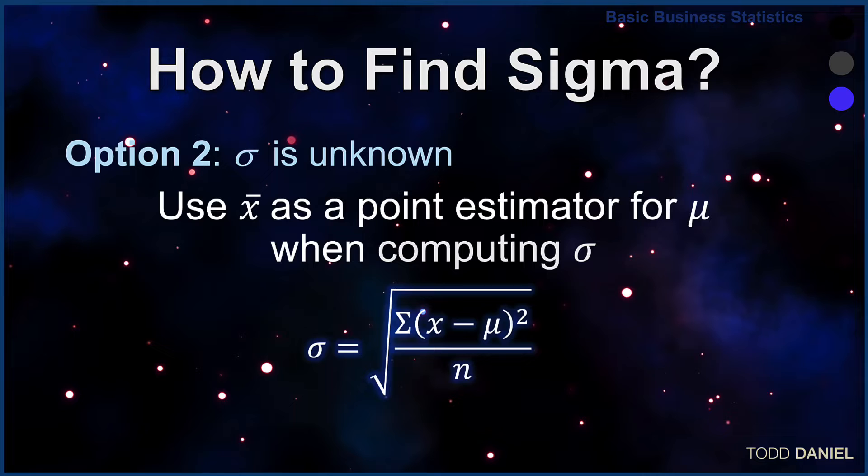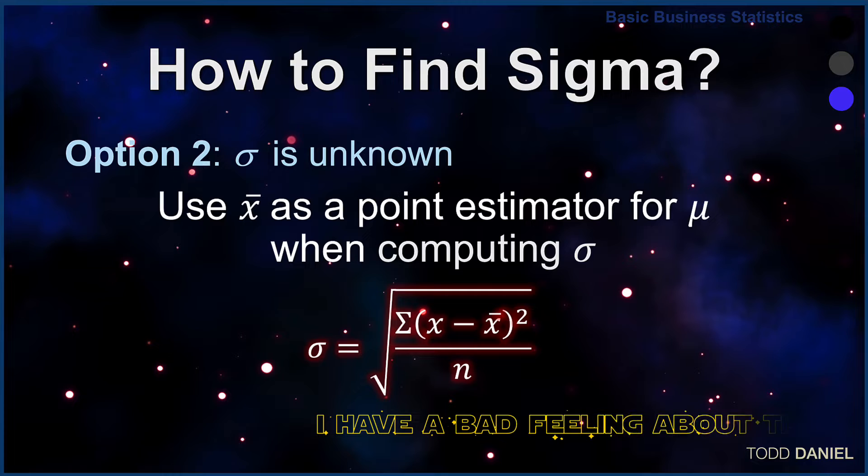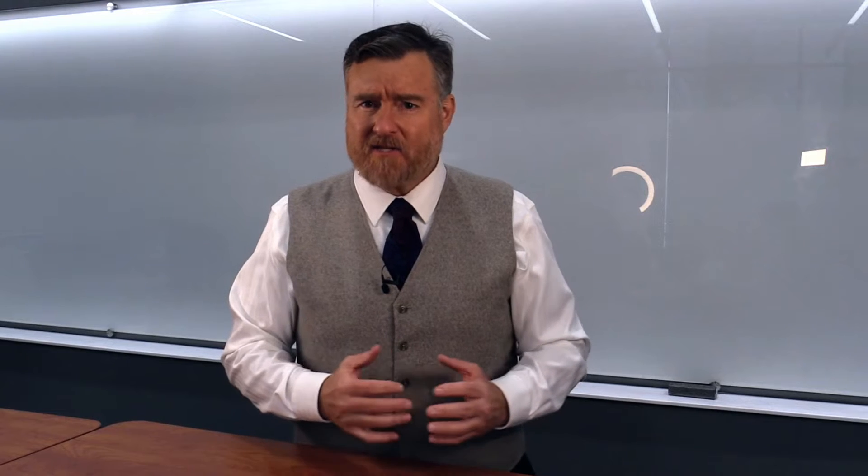This is option two, the circumstance in which the population standard deviation is unknown. Because we do not know the population mean, we cannot use it to calculate sigma. Instead, we are going to use the sample mean as a point estimator for the population mean in the formula for standard deviation. Now that may seem simple, but I have a bad feeling about this.